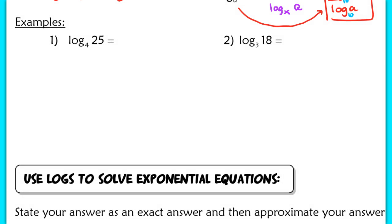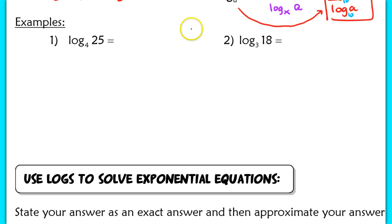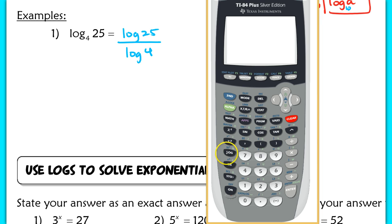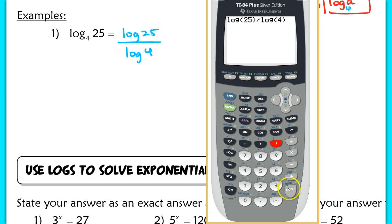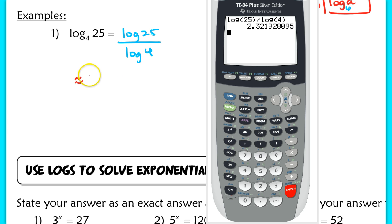For log base 4 of 25, I can approximate: since 4² equals 16 and 4³ equals 64, the answer is between 2 and 3. Using change of base, log base 4 of 25 equals log of 25 divided by log of 4. Plugging that into the calculator — log 25 divided by log 4 — gives approximately 2.322. That confirms it falls between 2 and 3.